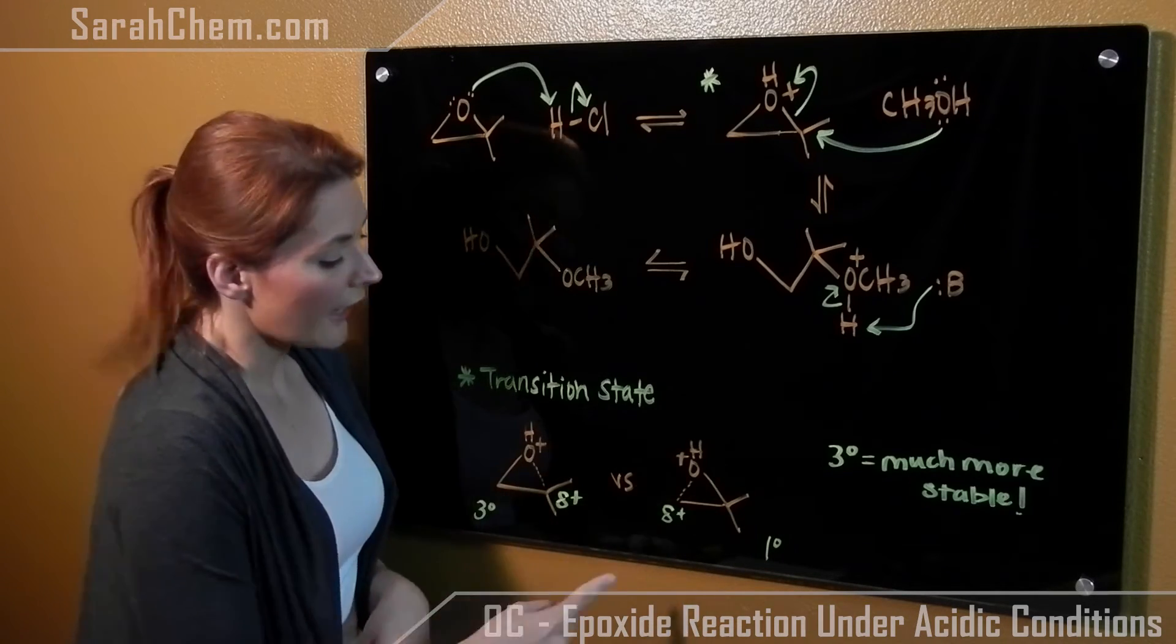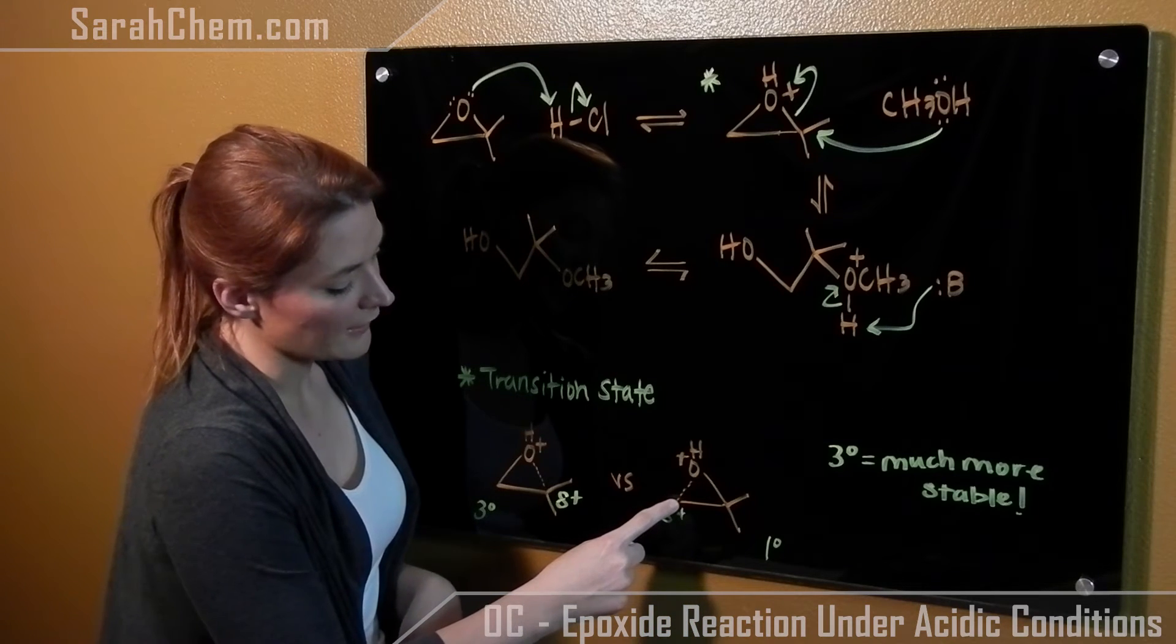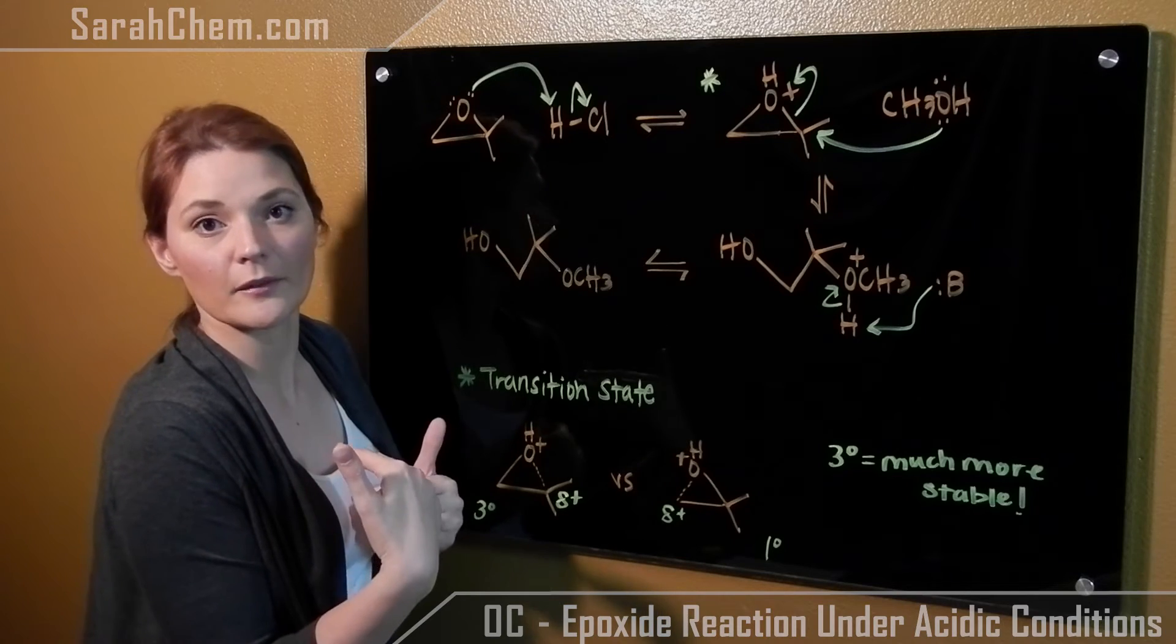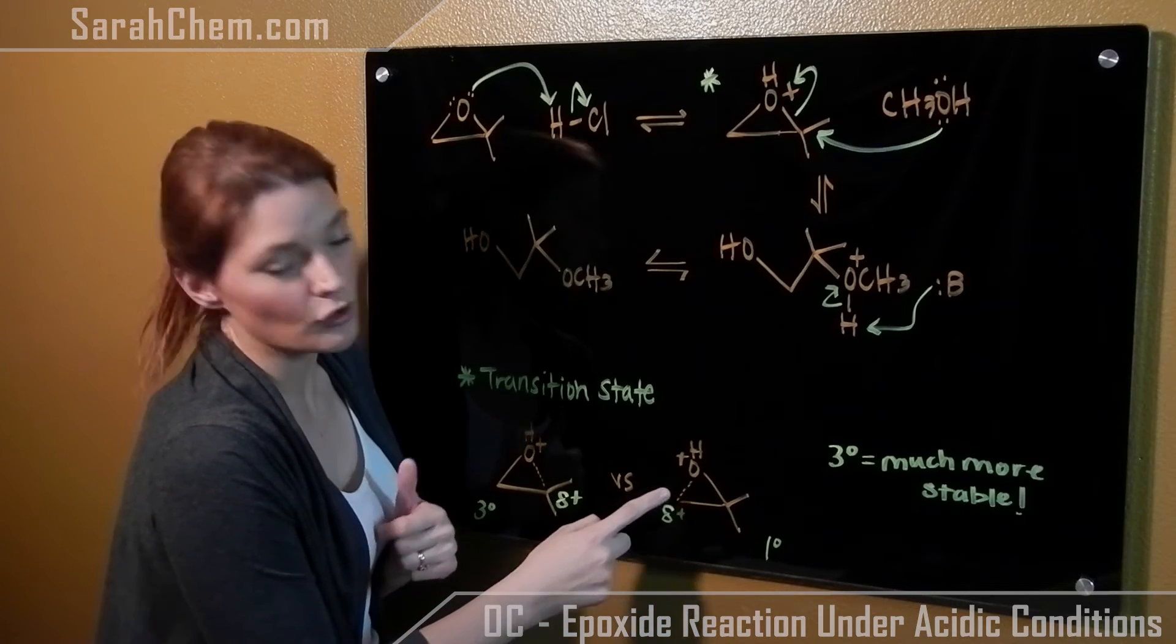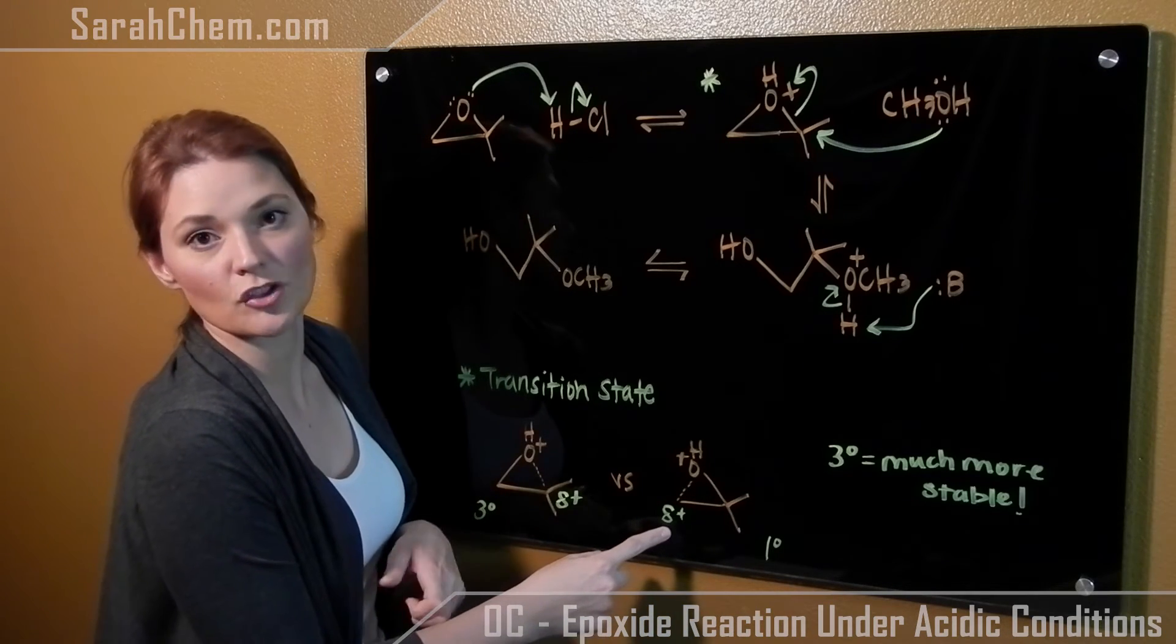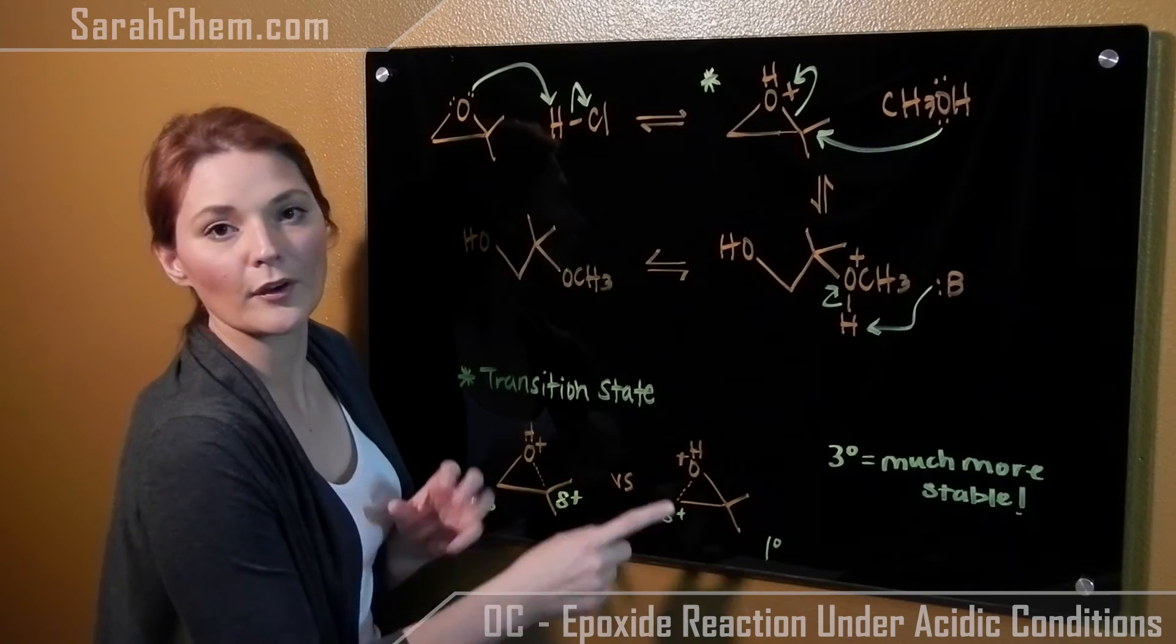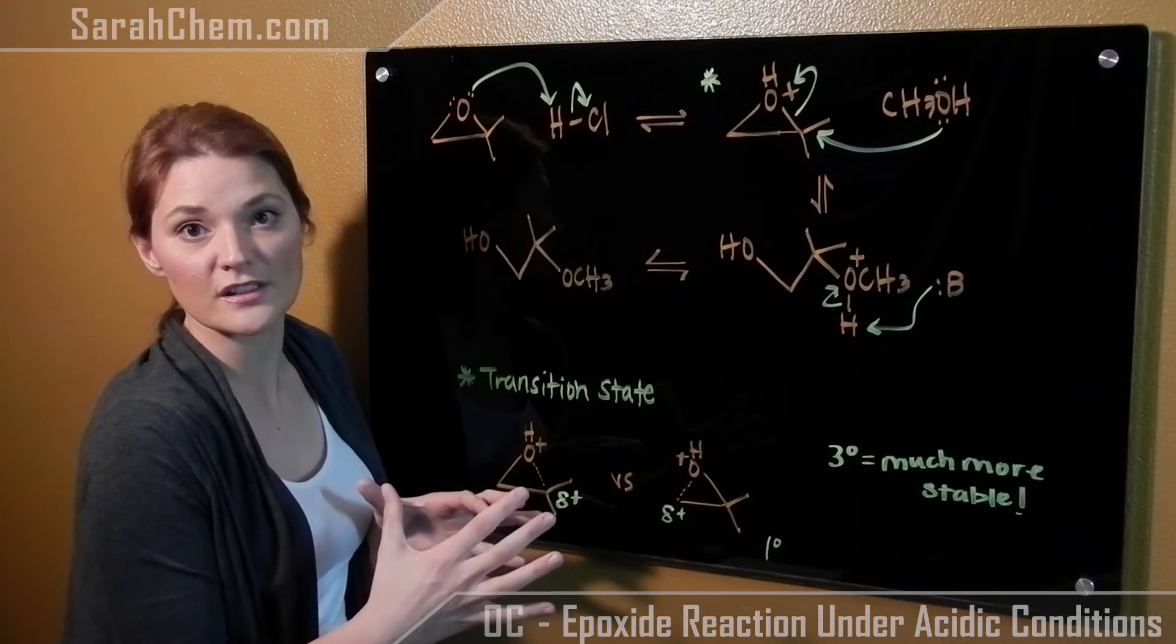So it's got this kind of partially broken bond happening with one of these two carbons. Now we have two options. It could either be a little bit broken on this side, and when I say broken it means oxygen is taking its electrons and leaving. So if it's taking its electrons, we're going to develop this partially positive charge. If it happened on this carbon, that's a primary carbon, so we'd have a primary carbocation-like transition state.